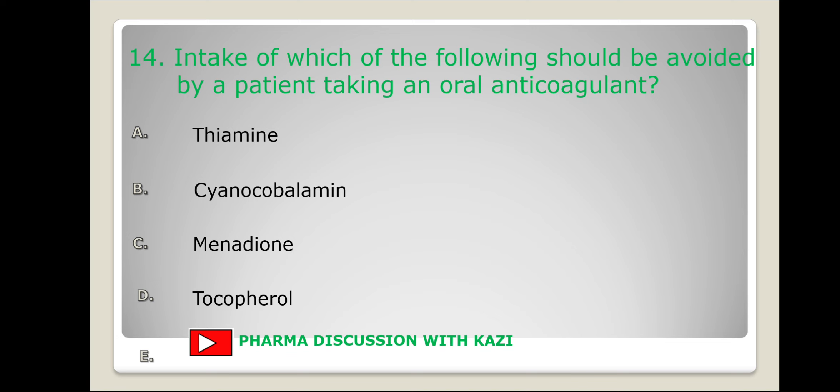Next question: intake of which of the following should be avoided by a patient taking an oral anticoagulant? The options are thiamine, cyanocobalamin, menadion, or tocopherol. Menadion is a vitamin K analog and helps in blood coagulation, which leads to pharmacological antagonism and reduces the effectivity of anticoagulants such as warfarin. So the correct answer is C.